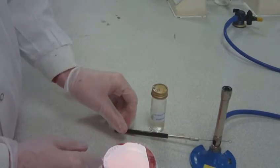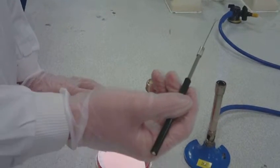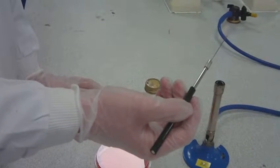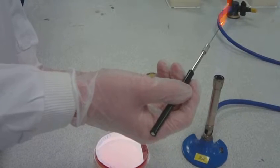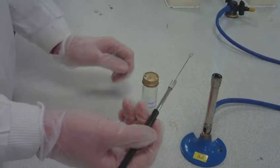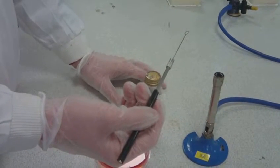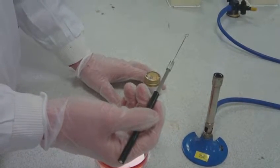Hold an inoculation loop in your right hand and put the inoculation loop through the peak of the blue flame until the wire is white hot. Then allow it to cool while keeping close to the Bunsen burner. Do not wave the loop around to cool quicker as it increases the chance of recontamination.